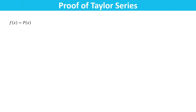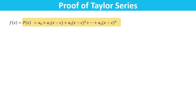Let f be an elementary function and p of x be its nth degree polynomial approximation, where c is a real number in the domain of function f. For expansion about an arbitrary value of c, it is convenient to write the polynomial p of x equals a₀ plus a₁ times (x minus c) plus a₂ times (x minus c) squared plus a₃ times (x minus c) cubed and so on, plus aₙ times (x minus c) to the nth power.